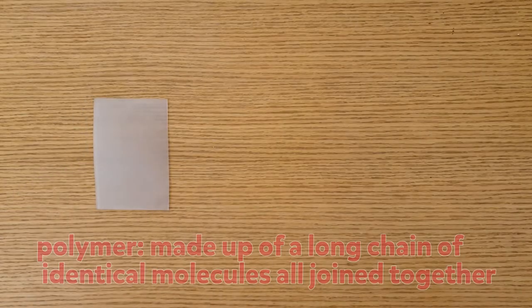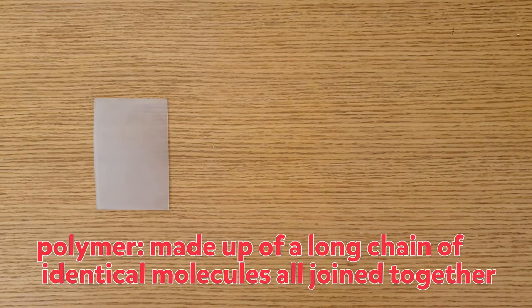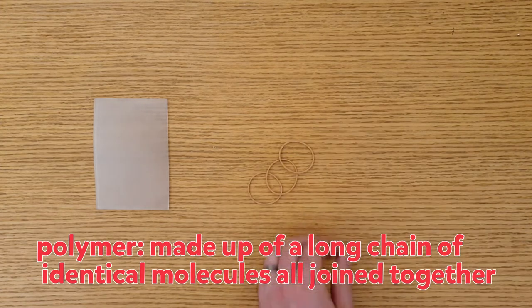So why does this plastic shrink? Polystyrene is a polymer, which means it's made up of a long chain of identical molecules all joined together.